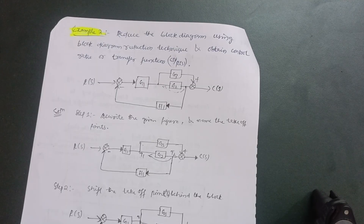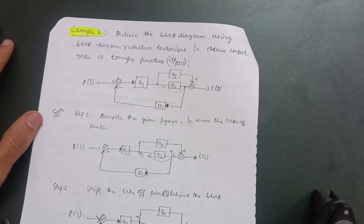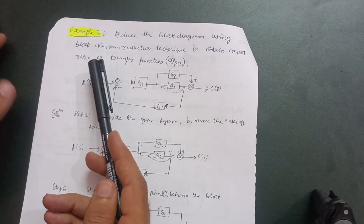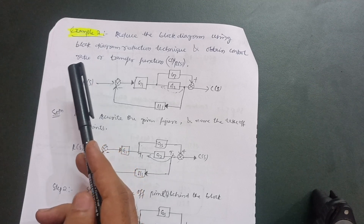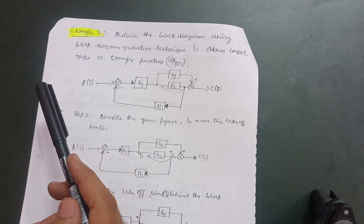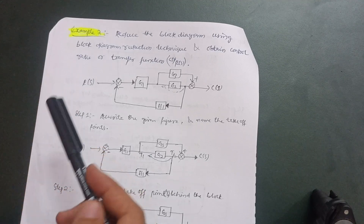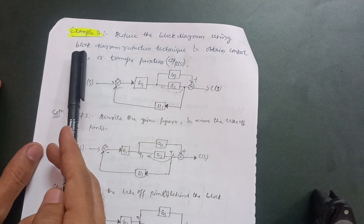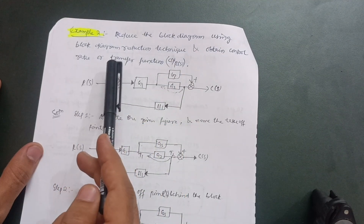Welcome back to my new lecture on control engineering. In the previous lecture we discussed one problem on block diagram reduction, so let us take another example. If you practice more problems, you will be perfect. You should practice at least eight or ten examples from this topic, as a 10-mark question will definitely come from this topic in the examination. Reduce the block diagram using block diagram reduction technique and obtain the control ratio or transfer function.